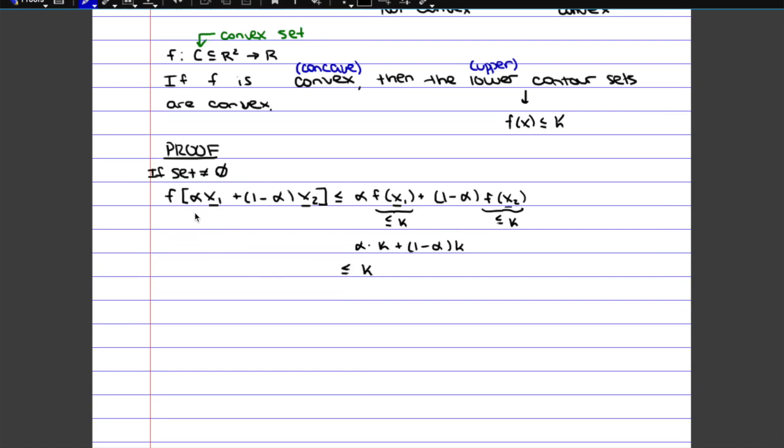So since we know that the value of the function, which essentially would be the z value if we're talking about a two variable function, if that value is smaller or equal to k, that means that it satisfies the inequality, and so the point is in the set. And so that also means that the corresponding x value, which is just alpha x₁ plus 1 minus alpha x₂.